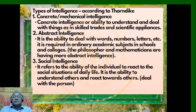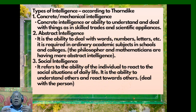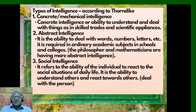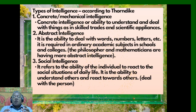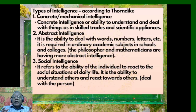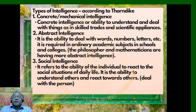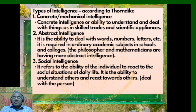According to Thorndike, there are different types of intelligence. Concrete mechanical intelligence is the ability to understand and deal with things, as in skilled trades and scientific appliances. Abstract intelligence is the ability to deal with words, numbers, and letters — required in ordinary academic subjects in schools and colleges; philosophers and mathematicians possess more of this. Social intelligence refers to the ability of individuals to react to social situations of daily life and to understand and relate to others.